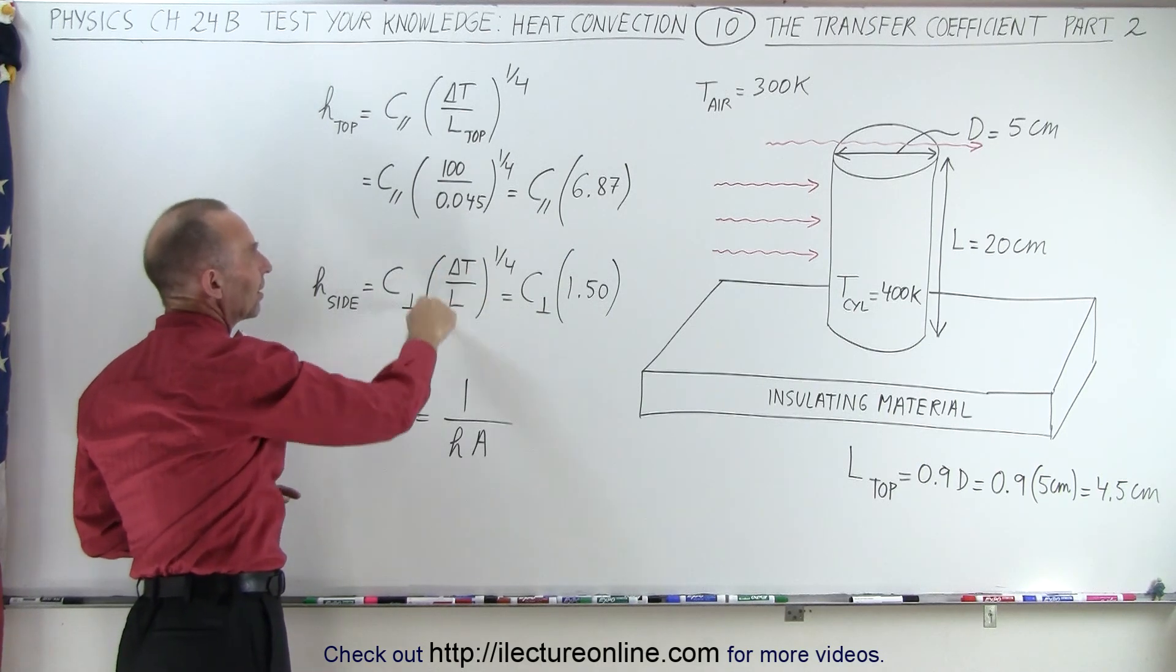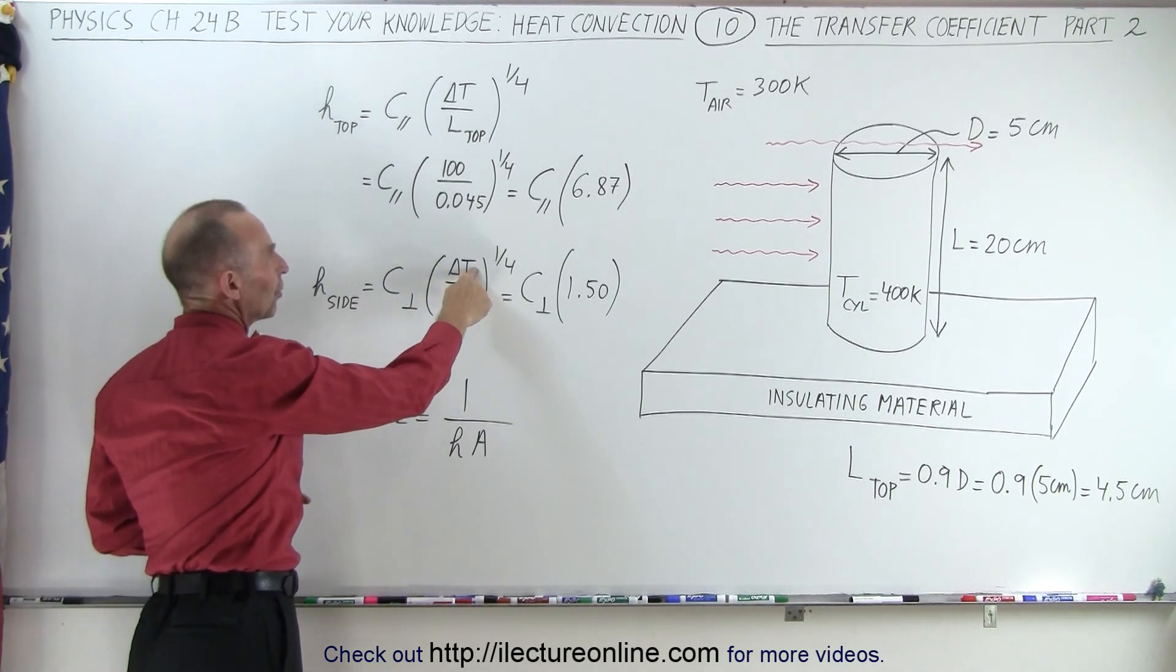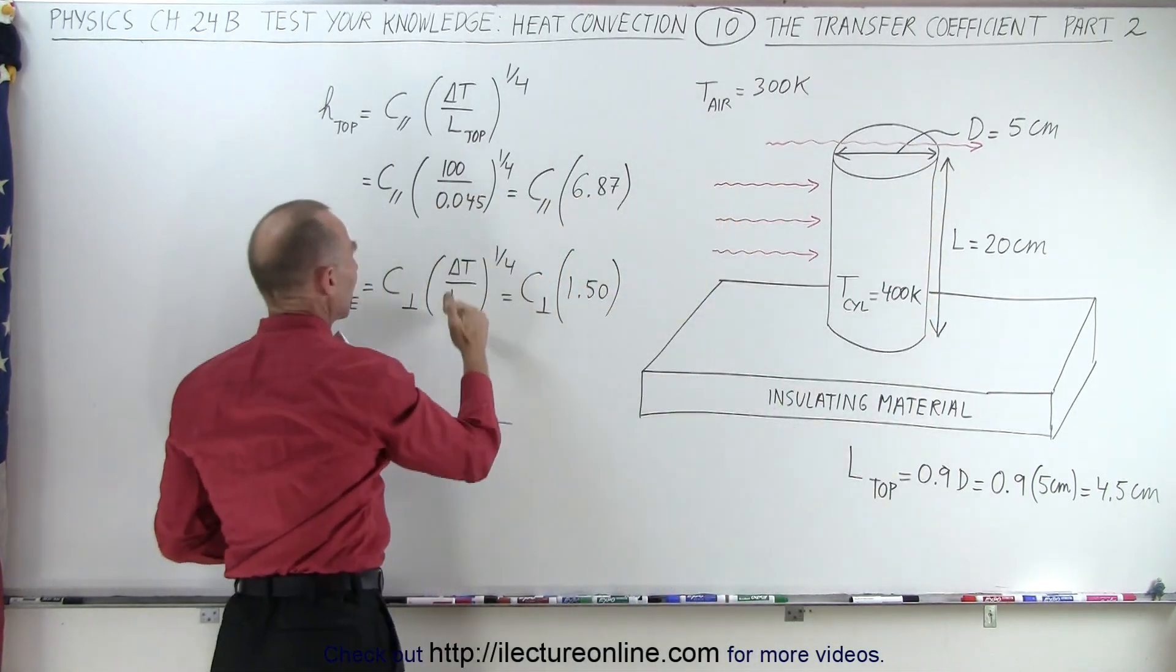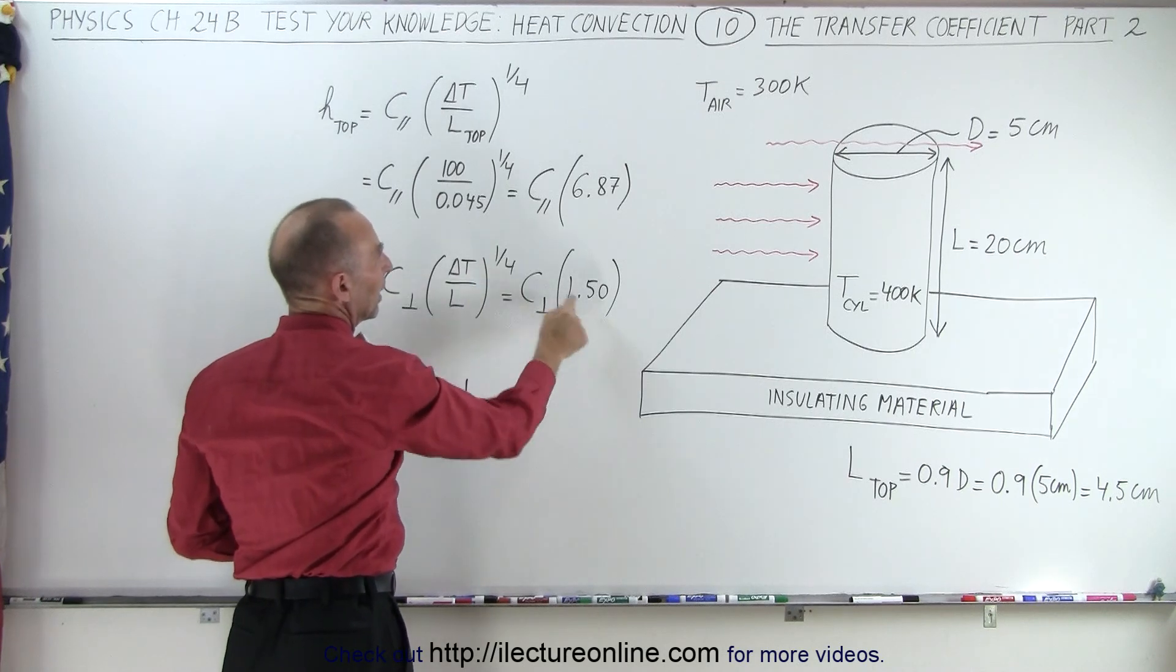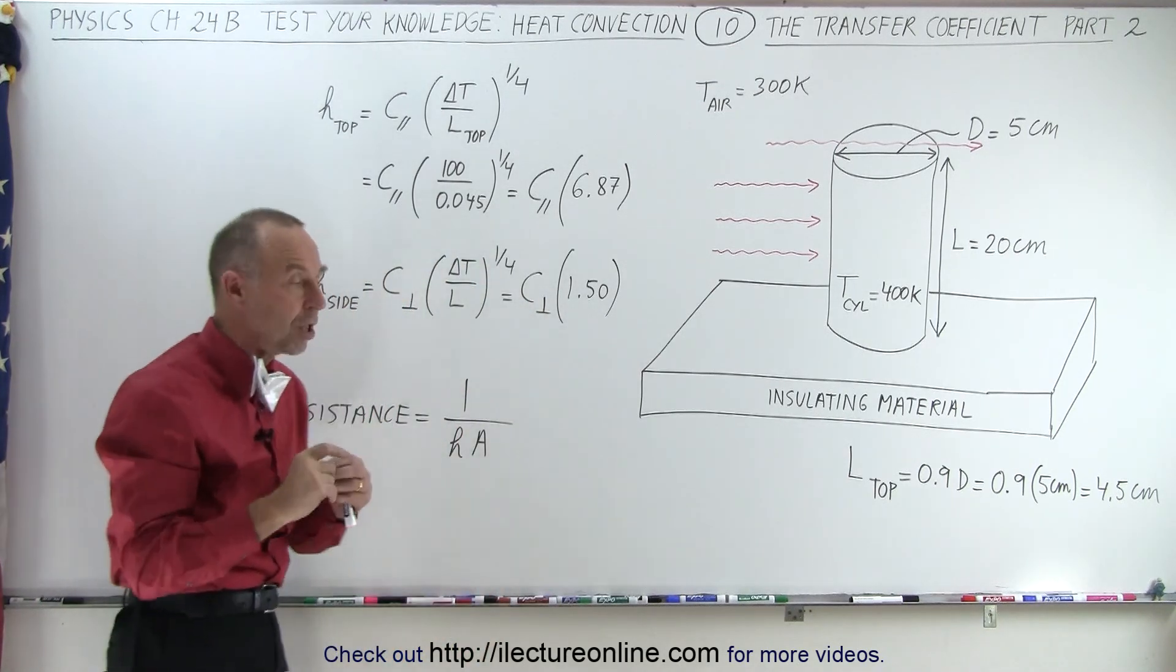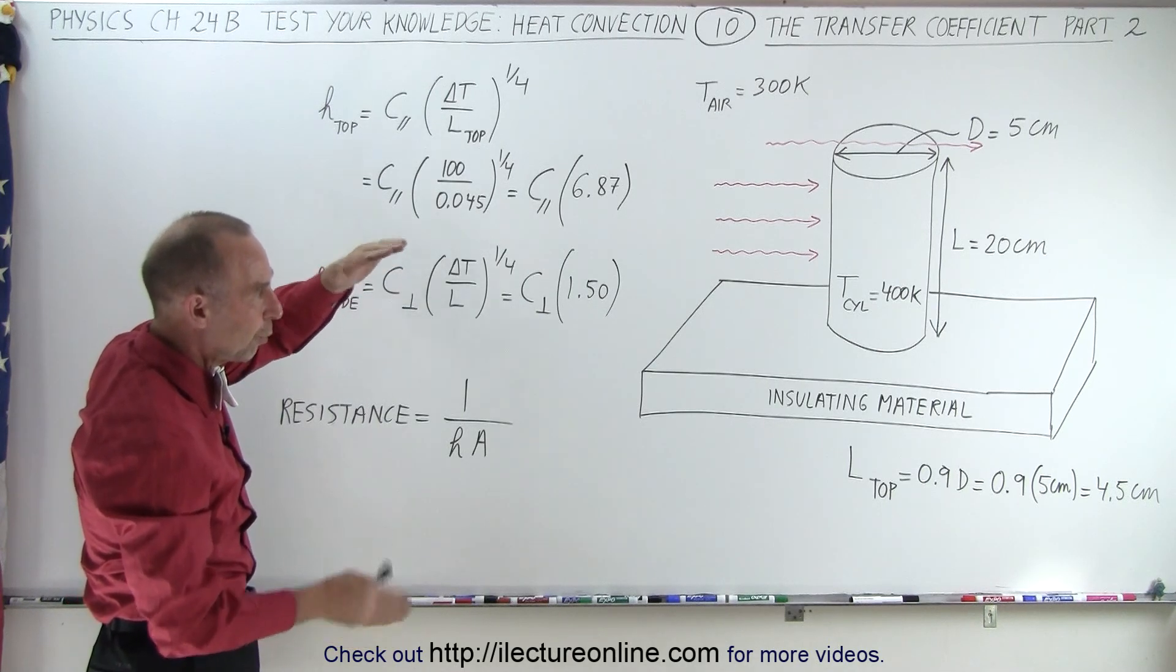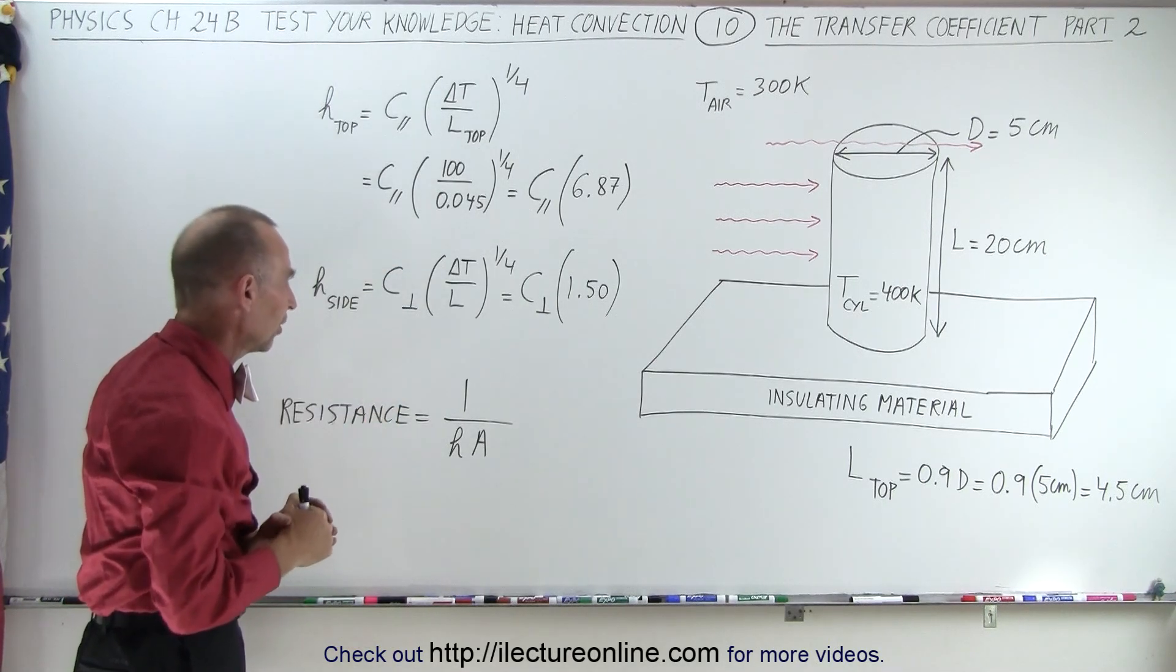Notice that we do the same kind of thing for the bottom. We have delta T, which is 100, and the length in this case will be 20 centimeters. So 100 divided by 20 is 5 to the one-fourth power is 1.5, a much smaller adjustment factor, because we're dealing with a larger surface on the vertical surface of the cylinder.